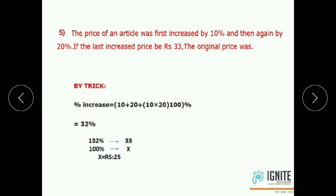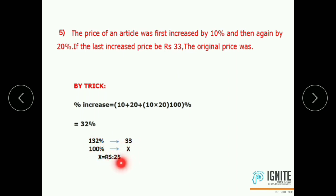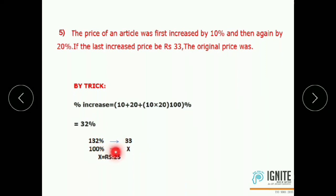If increase in percentage, 100 will add; if decrease, 100 will minus. Here, the increased price is Rs.33. That means 132% corresponds to Rs.33 — it is a 32% net increase. We have to calculate the original price, which is 100%. Since 132 divided by 4 is 33, 100 divided by 4 gives the answer: 25. The original price is Rs.25.